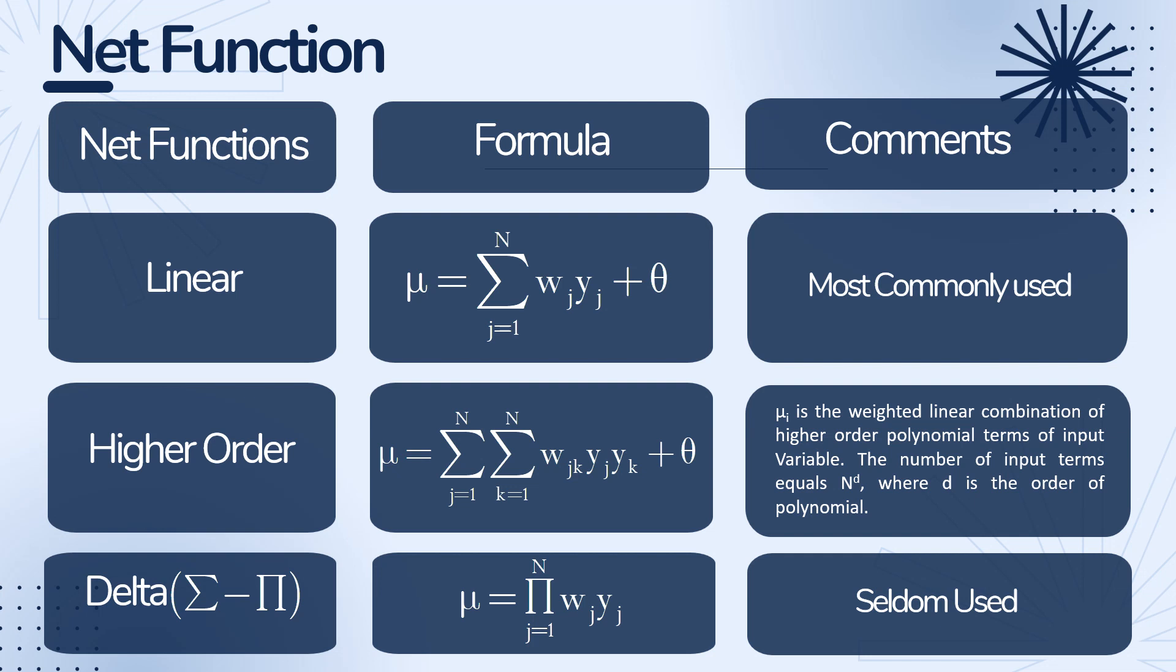Where you can find explanation about this bias term and what is basics of neural network. The link of this video you can find at the end of screen. Higher order, the second method is higher order.